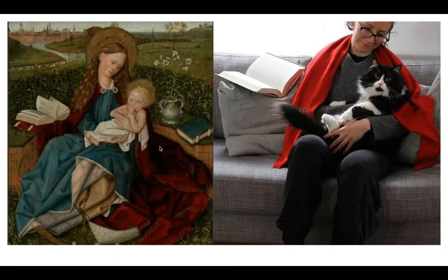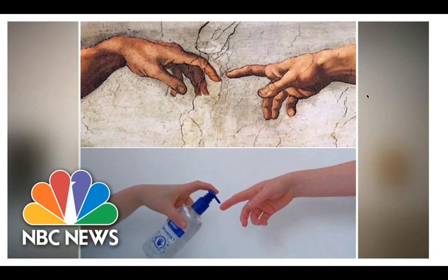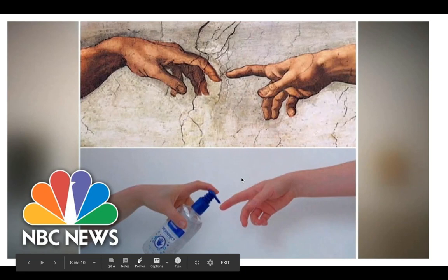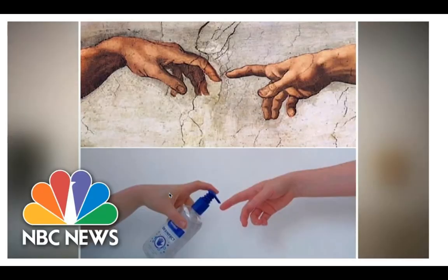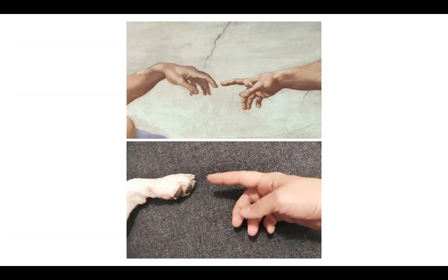Next, there's a woman with a book, a red cloak, and a baby in the original, recreated as a woman sitting with a book, a red scarf, and her cat instead of a baby — love that. Then we have the famous hands reaching toward each other from the Creation of Adam. One creative take uses a disinfectant bottle and hand sanitizer, and another version has a finger and a puppy paw. That one's a super easy option if you're stumped on what to create.